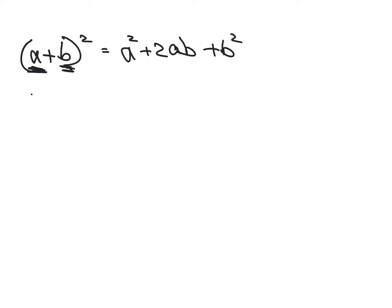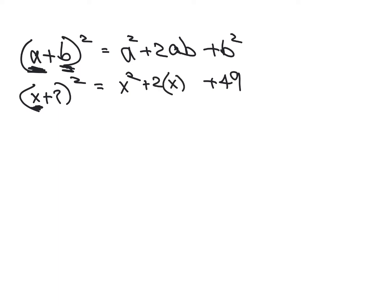So if I had x plus 7 and I squared it, this would equal x squared, because I squared the first term, square the second term — 7 times 7 is 49 — 2 times whatever the first term is, x, whatever the second term is, 7. Then we can clean it up and get 49.